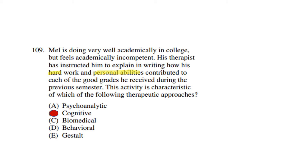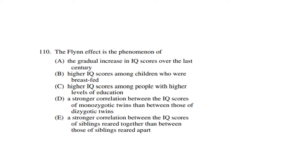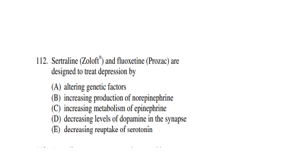Question 110: The Flynn effect is the phenomenon of the gradual increase in IQ scores over the last century. Question 112: Sertraline, also known as Zoloft, and fluoxetine, also known as Prozac, are designed to treat depression by decreasing the reuptake of serotonin. Serotonin is a neurotransmitter known as a mood stabilizer — it produces a sense of happiness and pleasure. In depressive patients, serotonin reuptake increases, and medicines such as Prozac and Zoloft are used to decrease that reuptake.